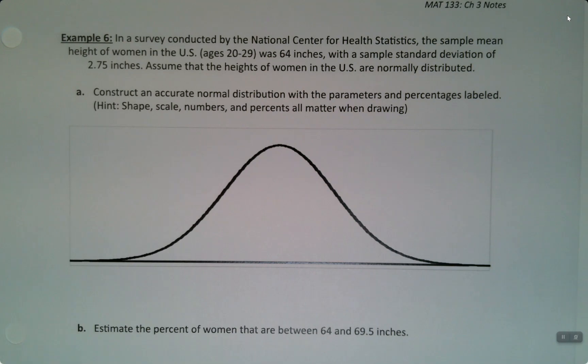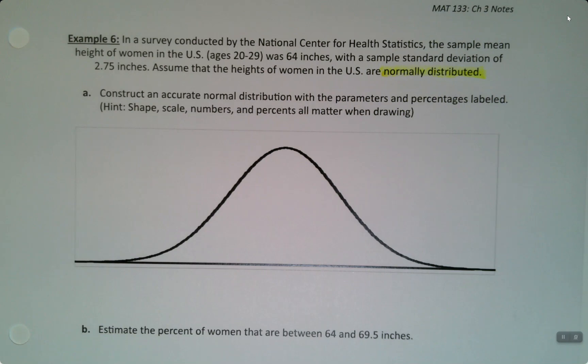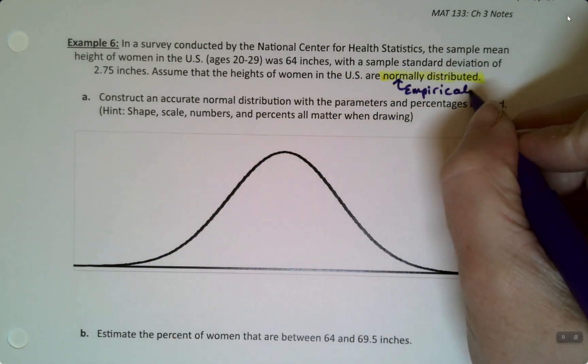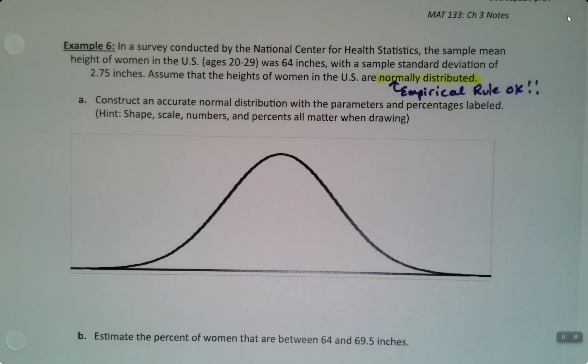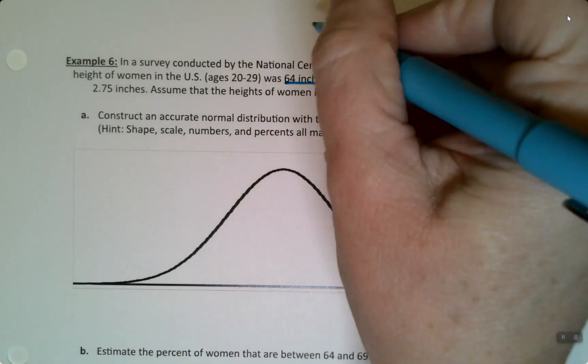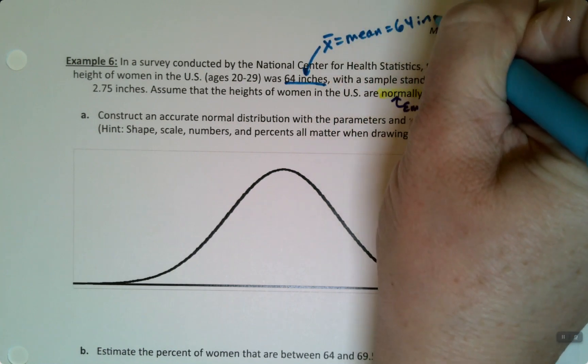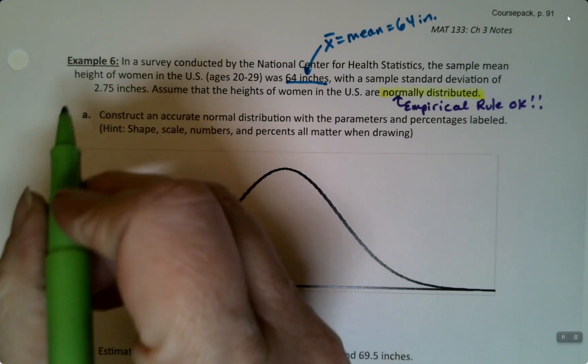In other words, the empirical rule is okay, right? So normally distributed, that means empirical rule is a go. Because it has to be this shape that you see down below in order to be valid. If it's not normal, we have other problems. Now when we're analyzing this problem, we can notice that the mean is 64. So the mean is 64, that's X bar. That's the mean, that's the center, and it's 64 inches. And then we also see that the standard deviation is 2.75 inches.